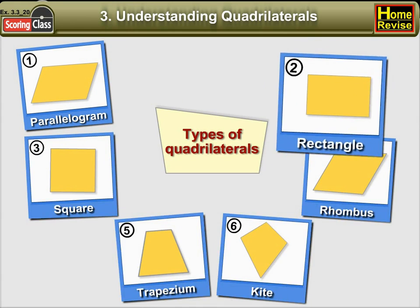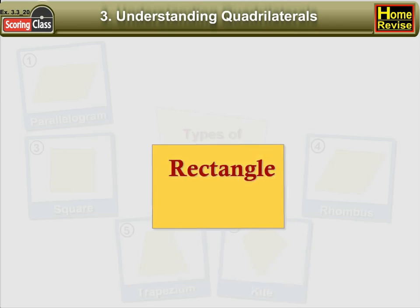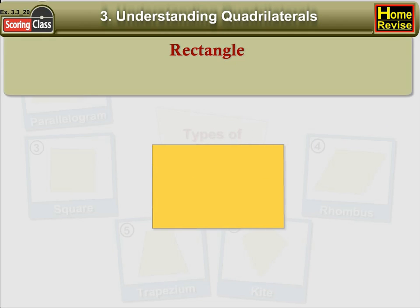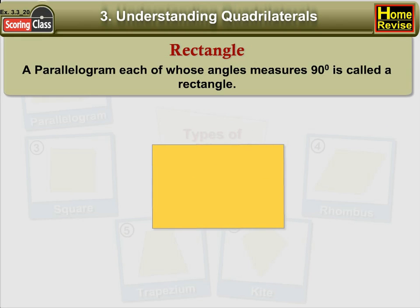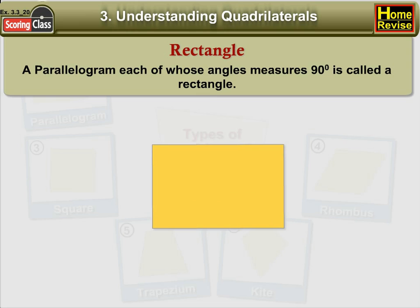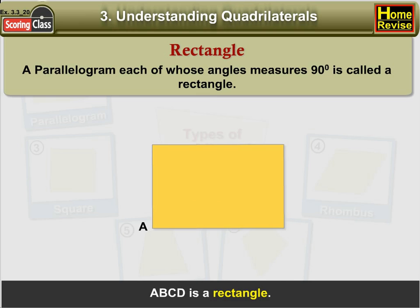2. Rectangle. A parallelogram each of whose angles measures 90 degrees is called a rectangle. In the figure, ABCD is a rectangle.